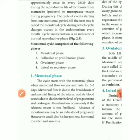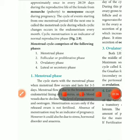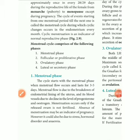Oligomenorrhea is a condition of infrequent menstrual periods. A woman who regularly goes more than 35 days without menstruating may be diagnosed with oligomenorrhea. These are the menstrual disorders seen in females.